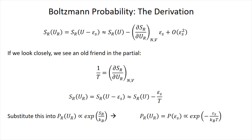You probably already noticed that the partial derivative of S with respect to U is something we know about — it's just the inverse temperature. How the entropy of the reservoir changes when we change its internal energy under conditions of constant N and V is just what we use to define 1/T. So we can rewrite the first-order Taylor expansion for the entropy of the reservoir as some number minus E_s over T. Substituting this back into the Boltzmann probability formula, P(E_s) is proportional to e^(-E_s / k_B T). The S_r(U) factor is irrelevant — it can be considered as part of whatever proportionality constant goes in this expression.